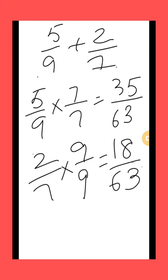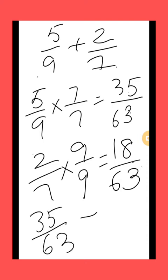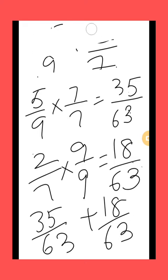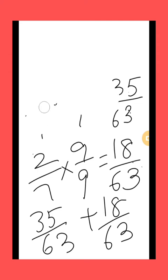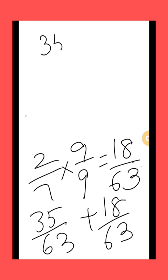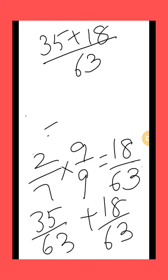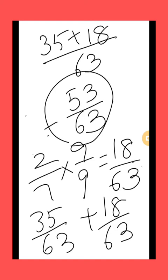Now we have like fractions — dono ke denominator same hain. Then we will add both fractions: 35 by 63 plus 18 by 63. Ab hum same like fractions wala procedure follow karenge. First of all we will add the numerators, that is 35 plus 18, keeping the denominator same, which is 63. 35 plus 18 is equal to 53 by 63. So this is your answer.